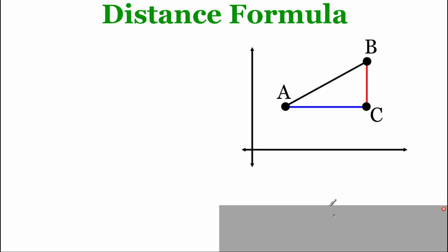Like the name implies, with the distance formula we're going to be finding the distance or the length between a couple of points out on our coordinate grid. I've got this picture drawn out here and we're going to be finding the length between points A and B. There's another point C out there that we're going to use to help us along the way. You can see from the picture that we've got a right triangle set up, and you may be familiar with the Pythagorean theorem, which is used to help find side lengths in a right triangle.